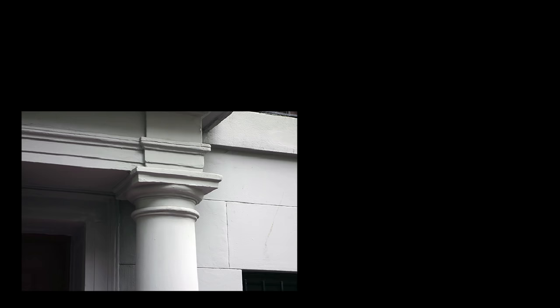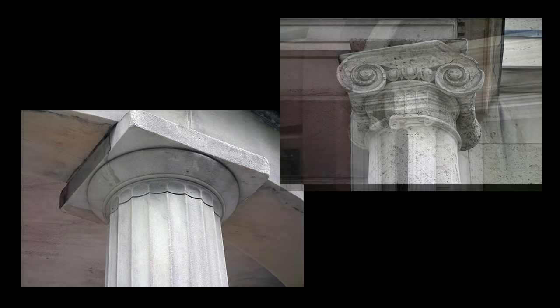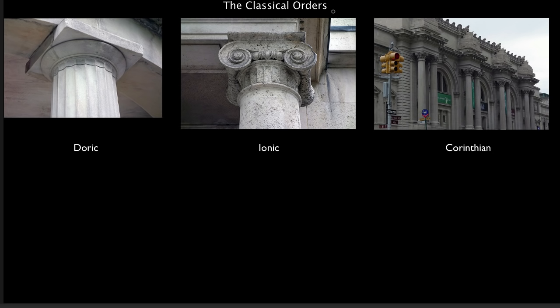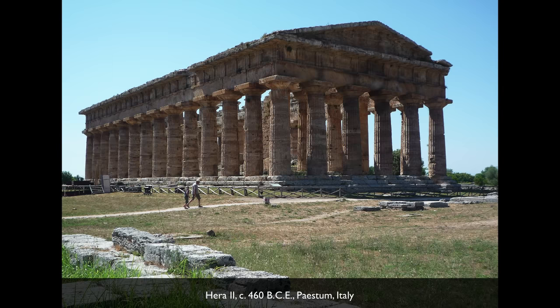Architecture is a language, and you know how when you learn a new vocabulary word you start to notice it everywhere? Well, the same thing happens with architecture — when you learn a new architectural form you start to see it everywhere. That's especially true of the classical orders, because these are essentially the building blocks of Western architecture and they've been used for 2,500 years.